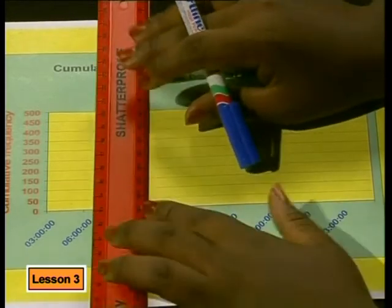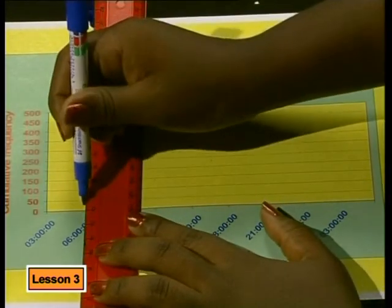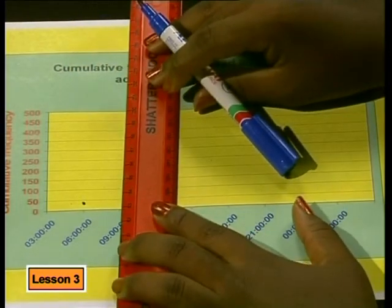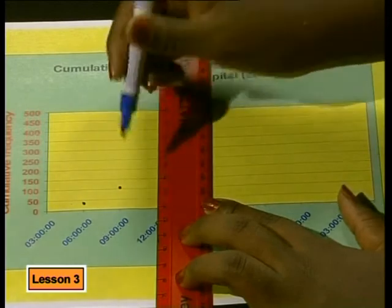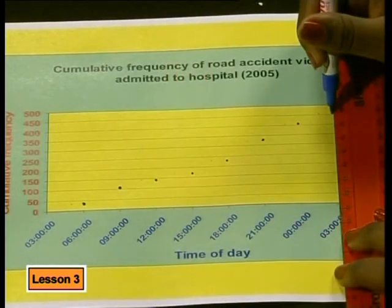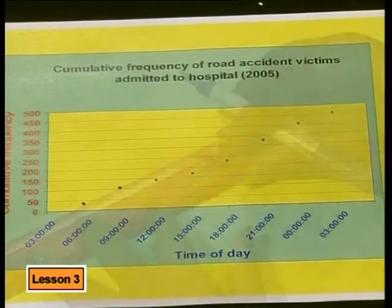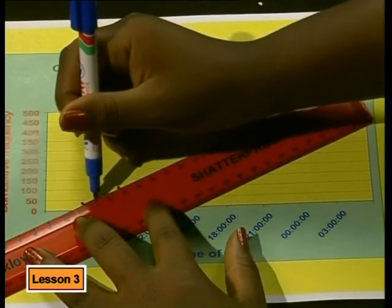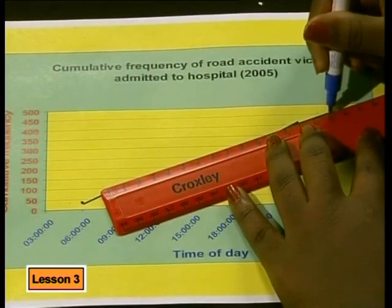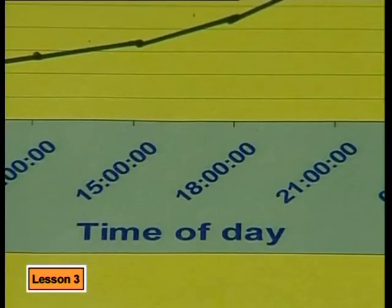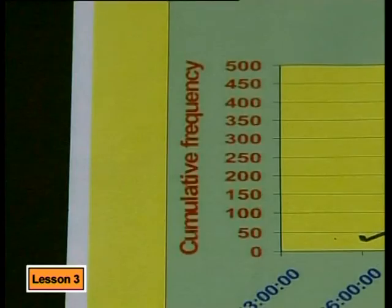Now we can plot the endpoint of each class interval against the cumulative frequency. The first point we can plot will be at 6 o'clock on the x-axis and 34 on the y-axis. The next point must be plotted at 9 o'clock and 110. The next will be at 12 o'clock and 148, and we end up with 453 at 3 o'clock. When you have filled in all the points from your table, the points can be joined. We can label the x-axis with time of day and the y-axis as cumulative frequency.